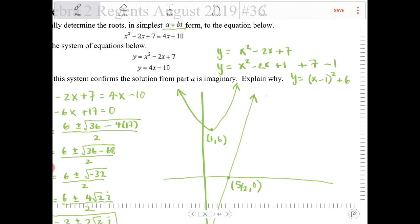These two graphs will never intersect. The parabola and line never intersect. This explains why their solution is imaginary.